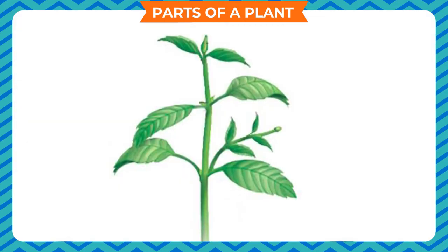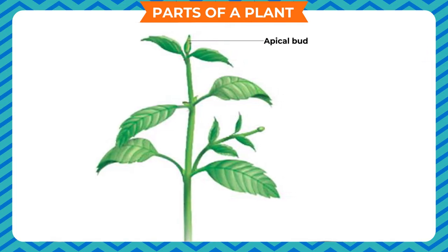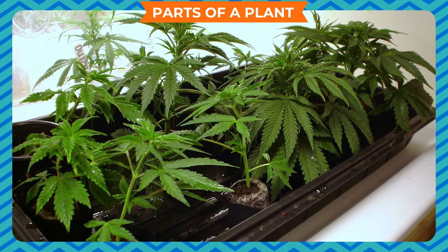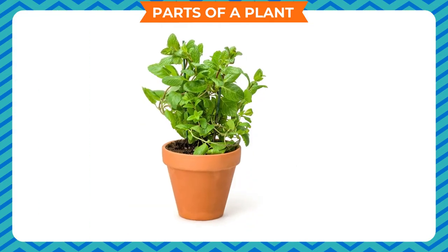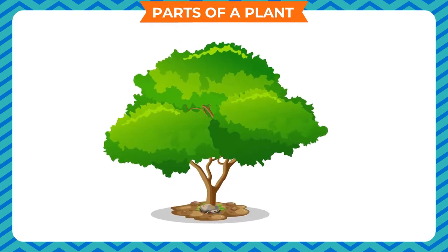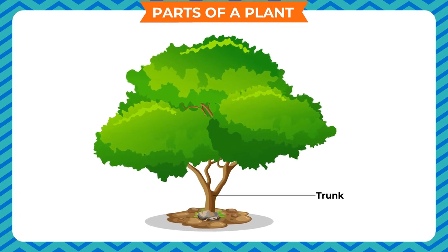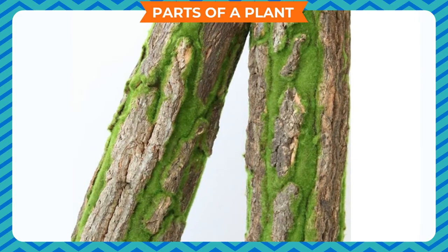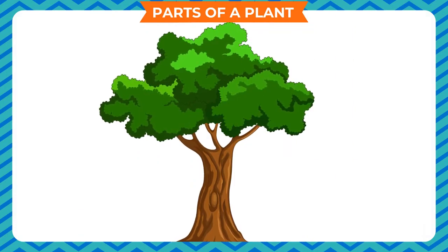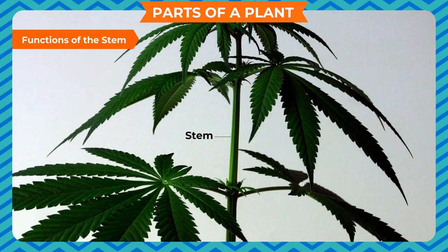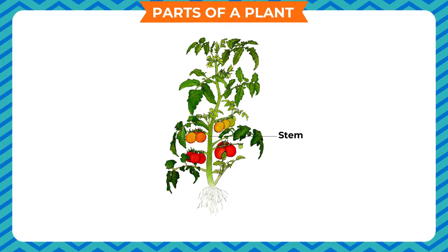An apical or terminal bud is located at the tip of the stem or a branch — the height of the plant grows with the help of this apical bud. Buds present in the axils of leaves are called axillary buds, from which new branches grow. A stem is green and soft when young, remaining soft in herbs but becoming hard and woody in trees, forming the trunk — the strongest part of a tree — which becomes brownish and is covered with bark that protects the inner parts.